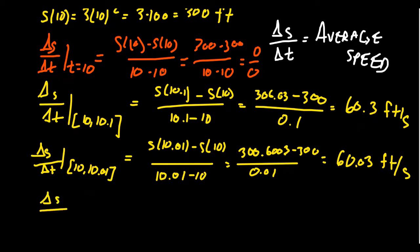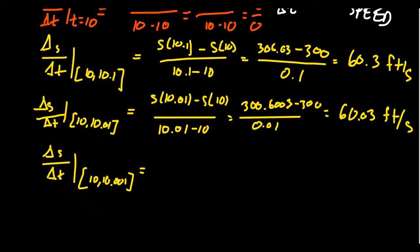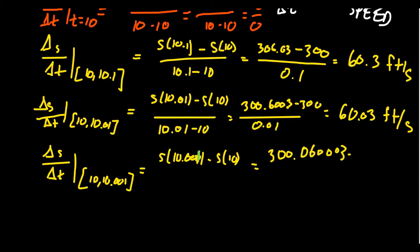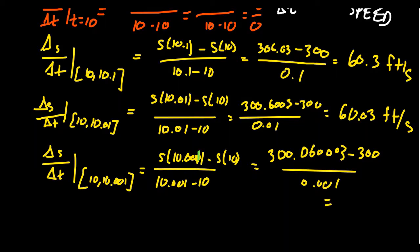As we shrunk the time interval, we got closer to the true value of speed at t = 10. Our first estimate was 60.3, the next was 60.03. Why stop there? What if we take the time interval to be one thousandth of a second — from 10 to 10.001? We'd compute s(10.001) minus s(10), which turns out to be 300.060003 minus 300, over a denominator of 0.001, giving us 60.003 feet per second.